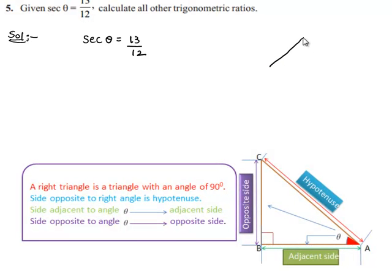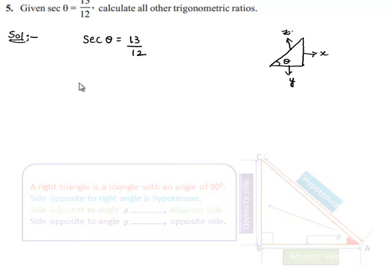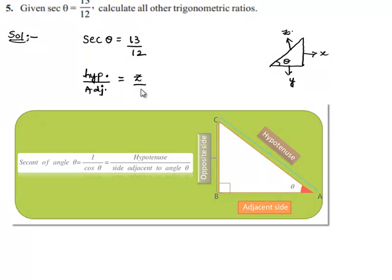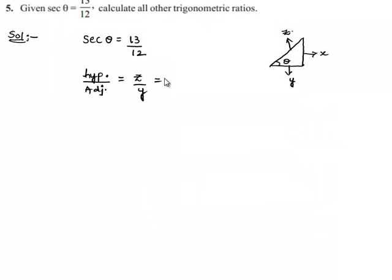Let us consider a right angle triangle in which theta is the base angle and let us designate the sides as x, y, and let the hypotenuse be z. Now, we know that secant of an angle is equal to hypotenuse by adjacent side. Here the hypotenuse is z and the adjacent side of angle theta is y. This can be equated to secant theta, which is given as 13 by 12.